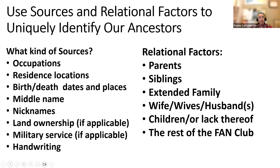If you're looking for somebody you felt never had children, and you find someone that might be them but the person has three children listed, that might be a clue that it isn't your person — or it might mean you need to do more research because your person might have actually had kids. And then the rest of the 'fan club' — family, neighbors, and associates — all those people related to this person. Who they associate with, who they're living near, will often help you separate out the people so you can find the one that's really yours.